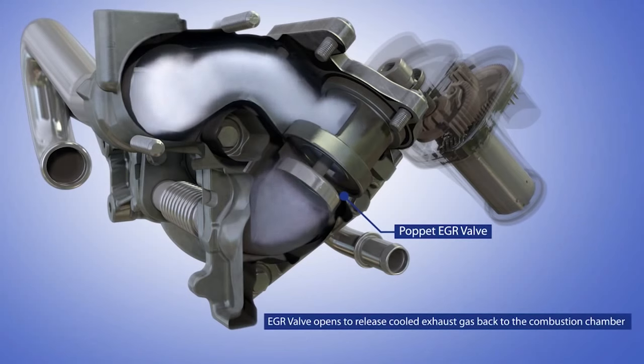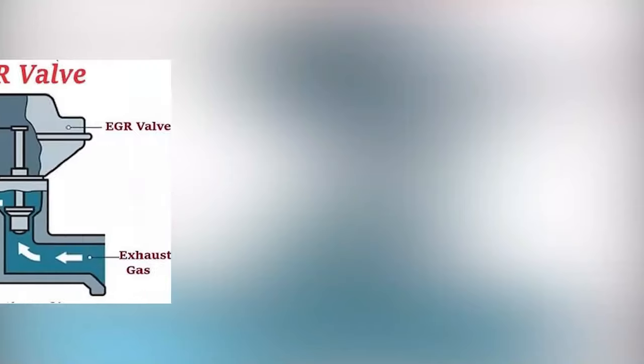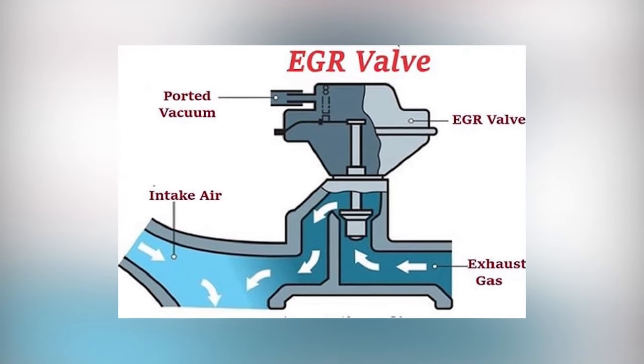The system works by having air mass sensors determine how much spent exhaust gas should be recirculated into the intake manifold. Now let's take a look on the varieties of EGR valves.